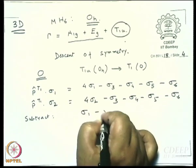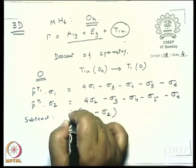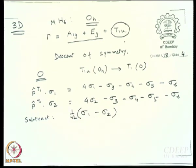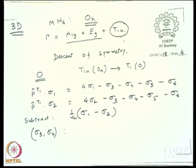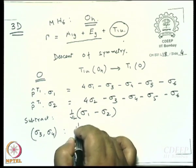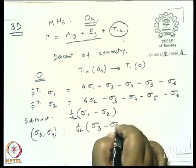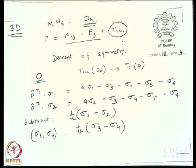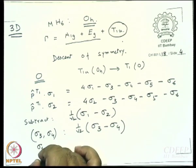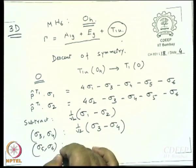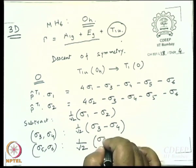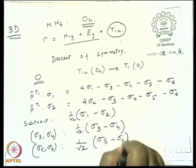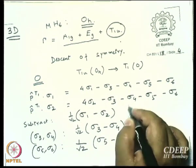Subtracting gives σ1 minus σ2, with normalization constant 1/√2. Similarly, operating on σ3 and σ4 gives σ3 minus σ4, and on σ5 and σ6 gives σ5 minus σ6. So maybe these three are the SALCs.